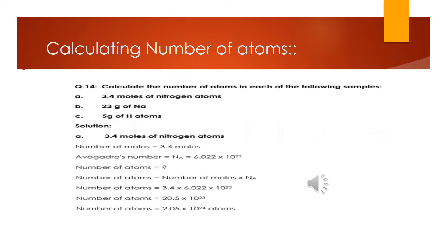So let us find the number of atoms present in 3.4 moles of nitrogen atoms. Number of moles given is 3.4, Avogadro's number is 6.022 × 10²³. Using the formula: number of atoms = number of moles × Avogadro's number, we simply multiply 3.4 by 6.022 × 10²³. The number of atoms we get is 2.05 × 10²⁴ atoms. You can see how simply we found the number of atoms when number of moles are given.